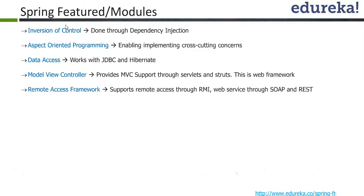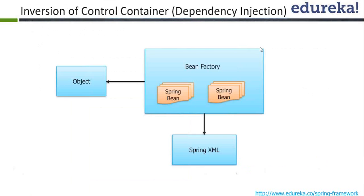Inversion of control is done through dependency injection. We have already seen loose coupling with the user and car example. For inversion of control, we will be configuring beans in an XML file and getting a bean from that file, which will be injected with all its dependencies. With inversion of control, you will not be asking for an object — you just configure it and it will be injected for you.